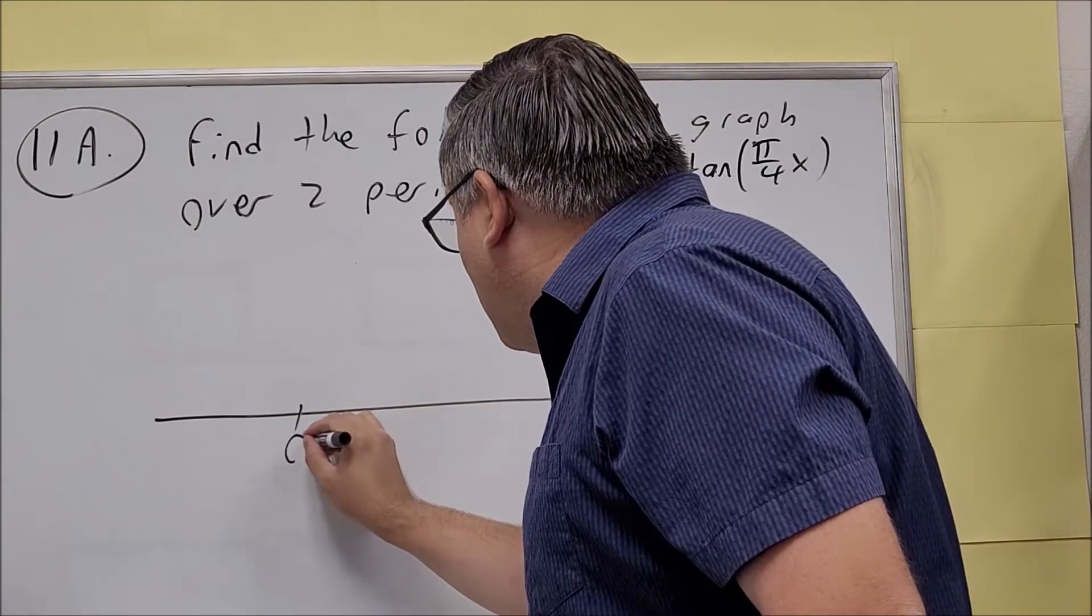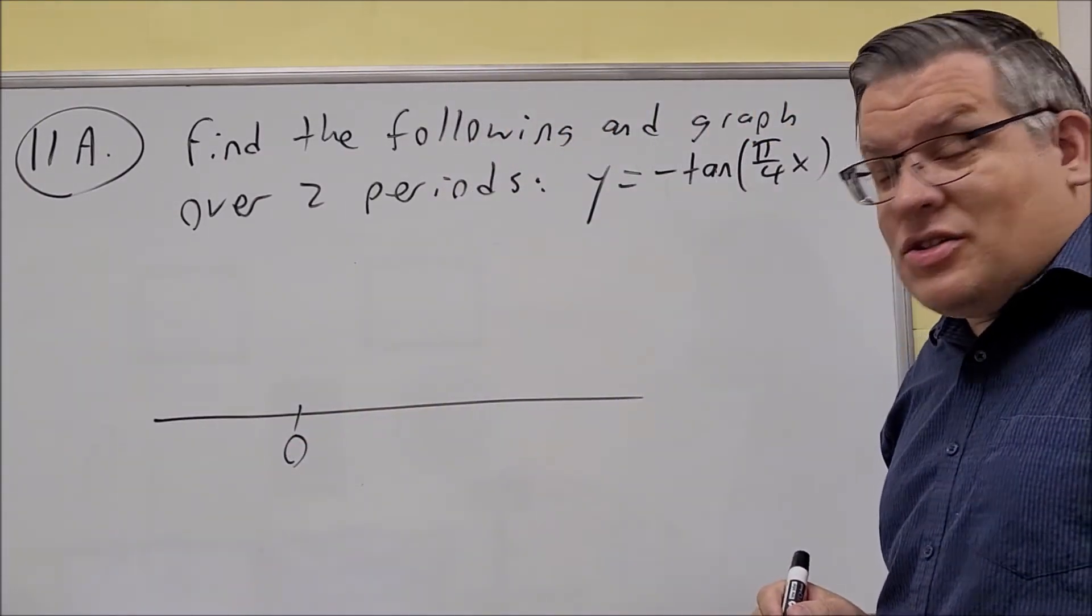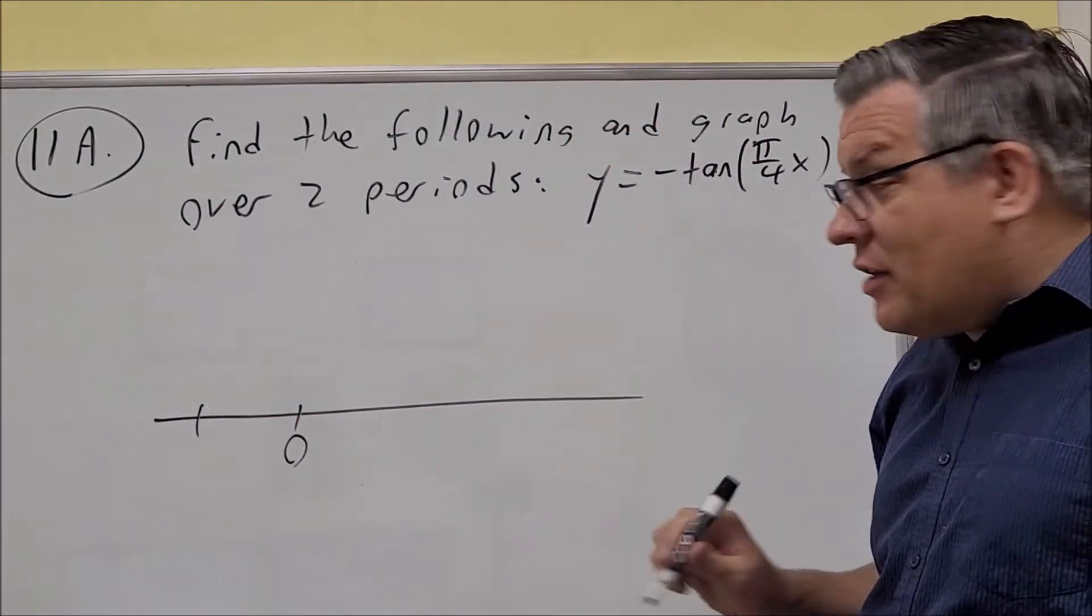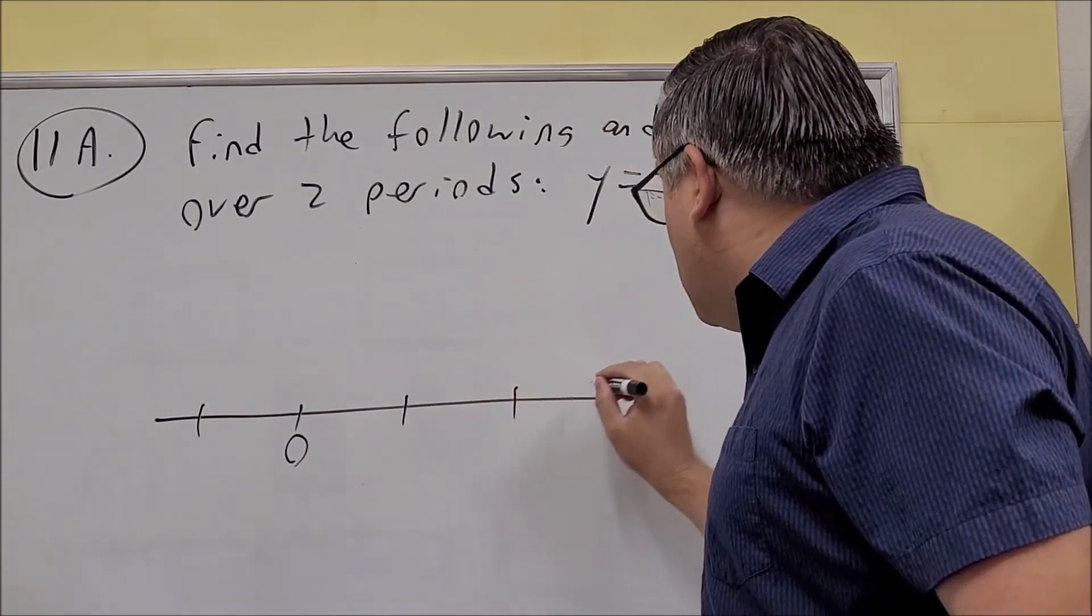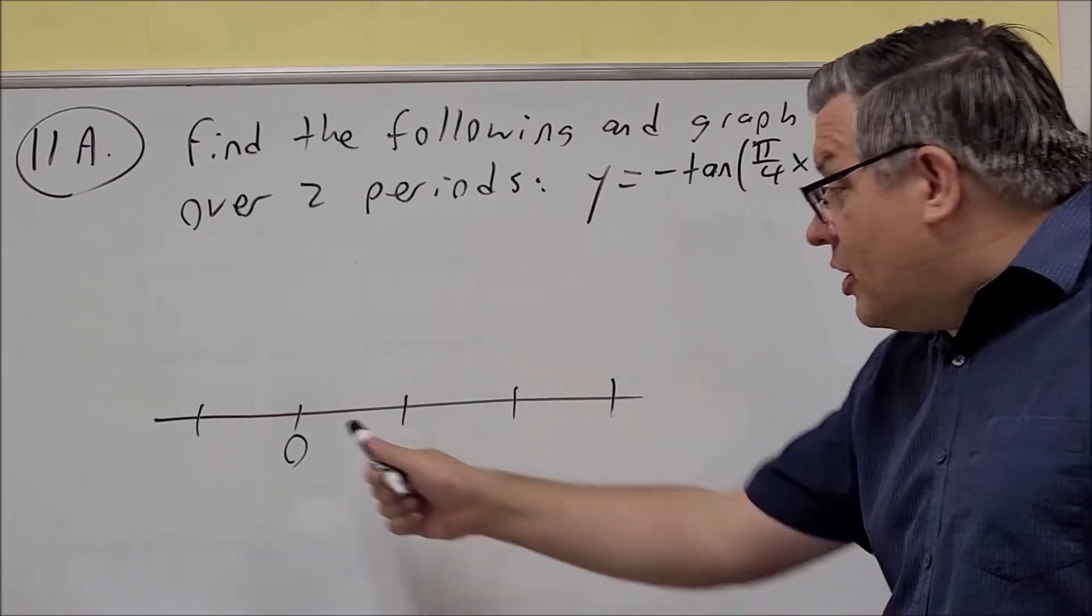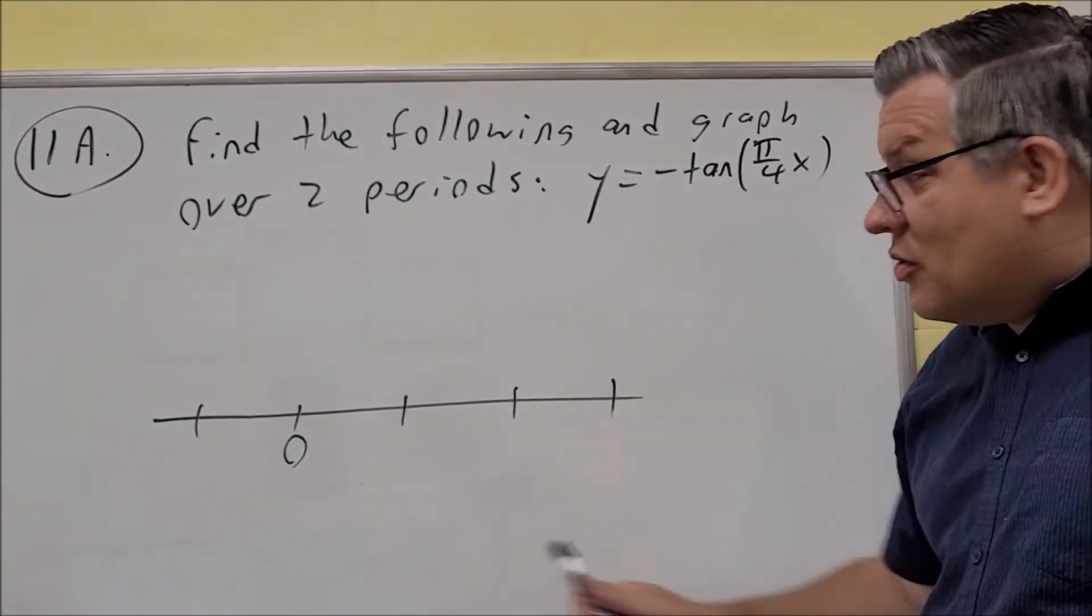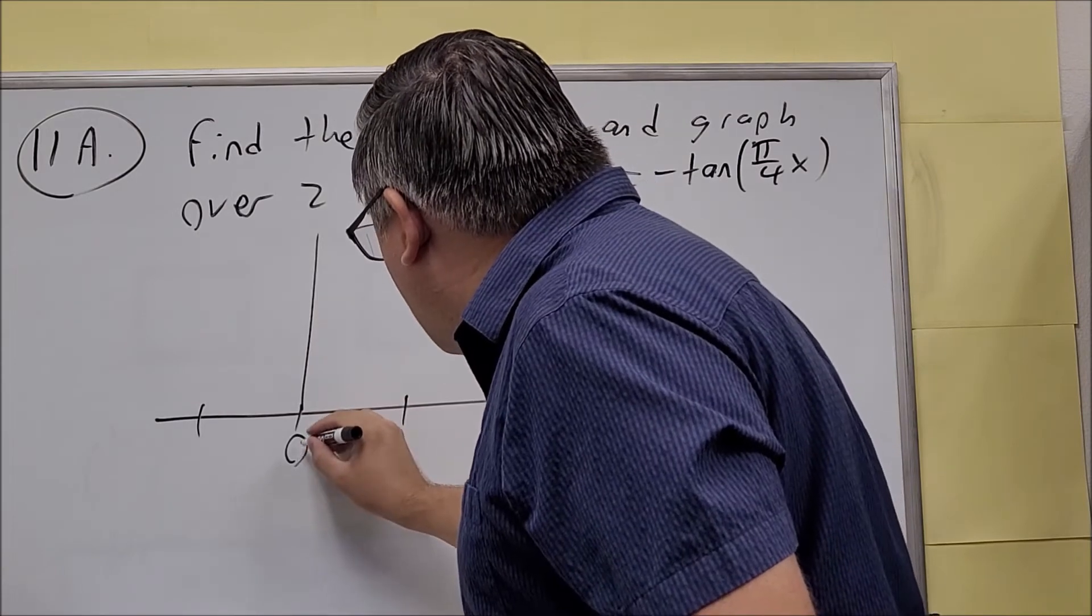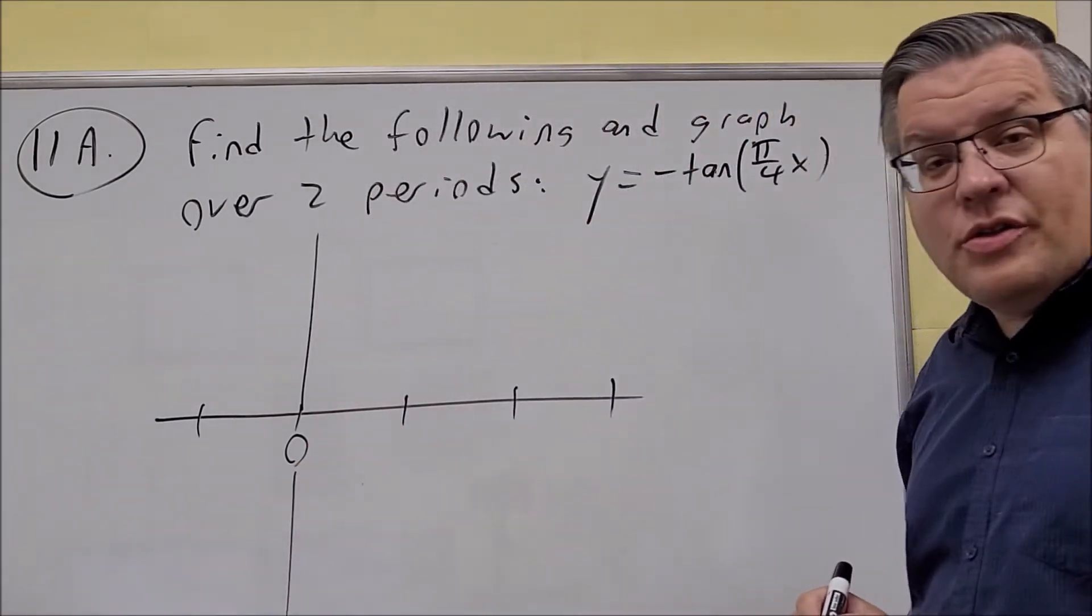Okay, so on the number line, remember that the phase shift is your second key point. There's going to be one to the left of that, and then the other ones go to the right. So 0 is here, that's your first key point. We'll put in the vertical axis as well.